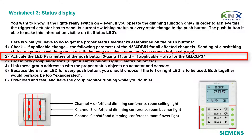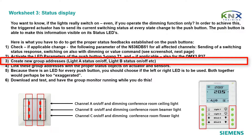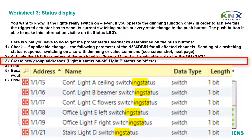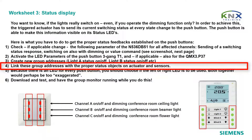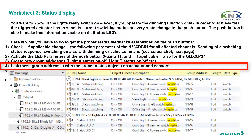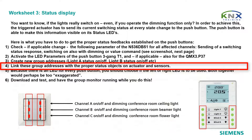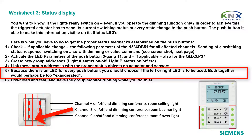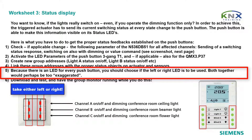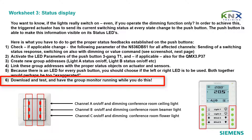Activate the LED parameters of the push button 3-Gang T1 and, if applicable, also for the QMX3 P37. Create new group addresses: Light A status on/off, Light B status on/off, etc. Link these group addresses with the proper status objects on actuator and sensors. Because there is an LED for every push button, choose whether the left or right LED row is to be used — both together would perhaps be too much. Finally, download and test with the group monitor running while you do this.